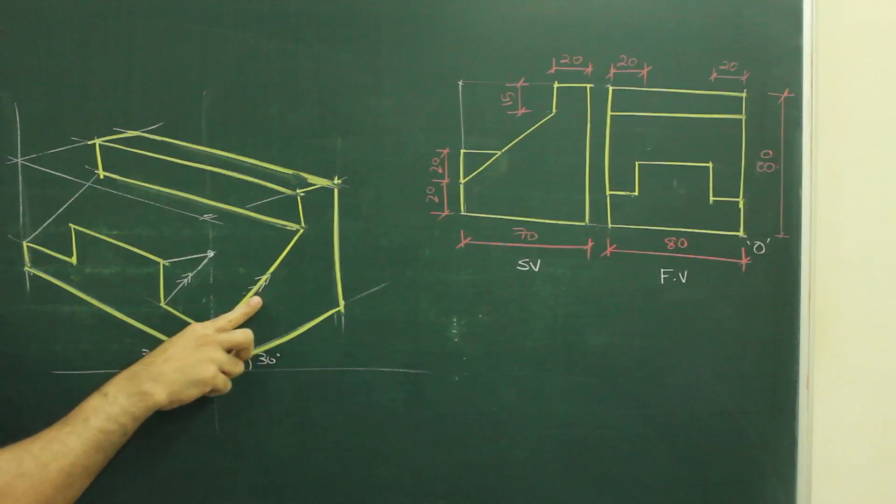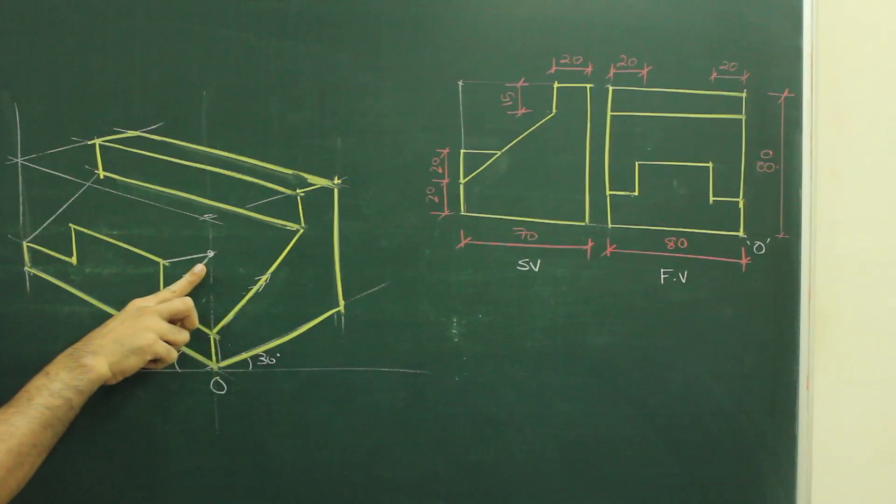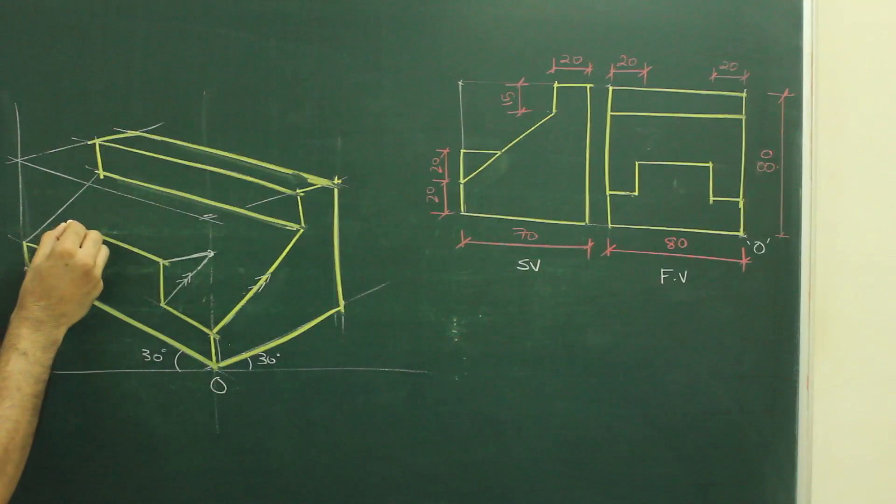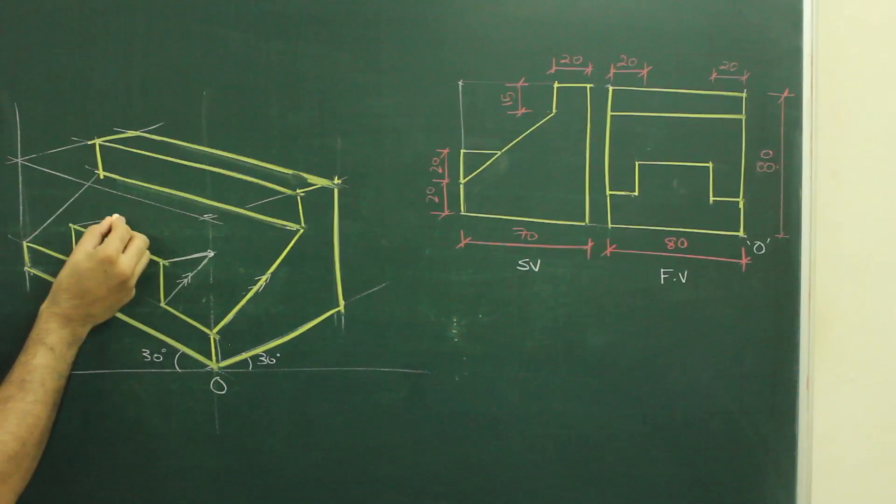Once again I will repeat, draw line parallel to this, passing through this point and one line which is inclined at 30 degree, normal line what we draw. Again, draw parallel line and we join this.